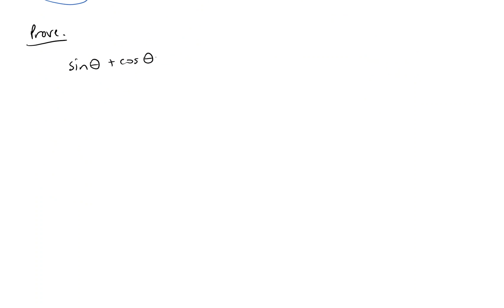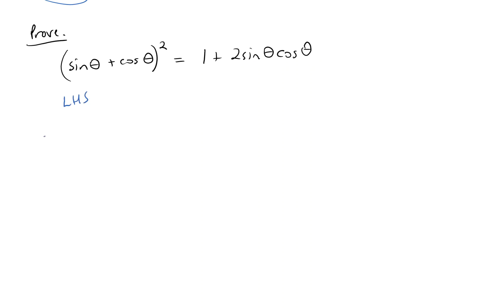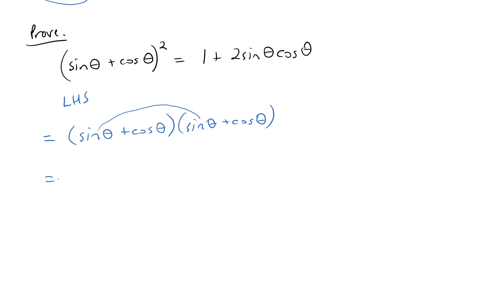Let's prove that the quantity sine theta plus cosine theta, squared, equals 1 plus 2 sine theta cosine theta. It's not quite clear what to do on the right-hand side, so let's work on the left-hand side. We can square it by multiplying sine theta plus cosine theta by itself. Distributing, we get sine theta times sine theta, which is sine squared of theta.